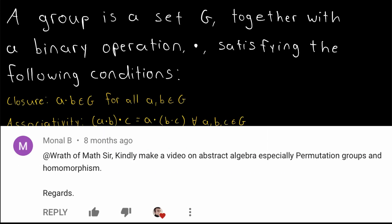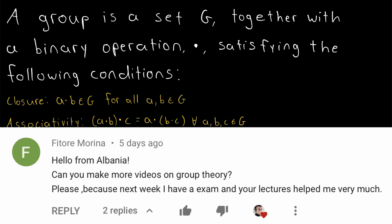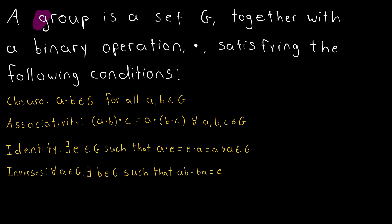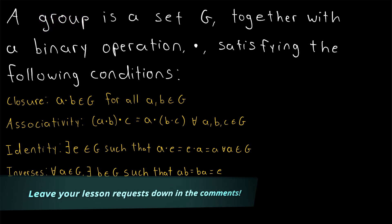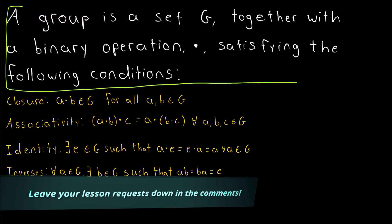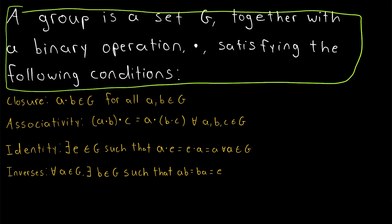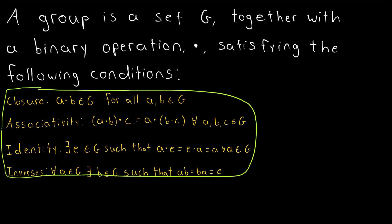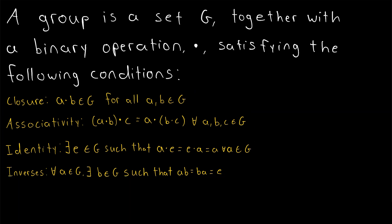I've been asked time and time again to do some lessons on group theory, and today we're finally getting into it. We'll be going over the definition of a group and we will see some examples. We're going to begin by taking a quick look at the first half of the definition of a group to give us some idea what we're talking about, and then before digging into the details of the second half, we'll take a quick look at an actual example of a group. So let's start.